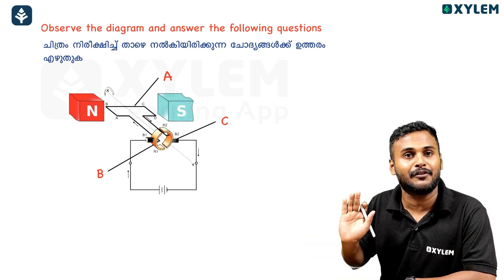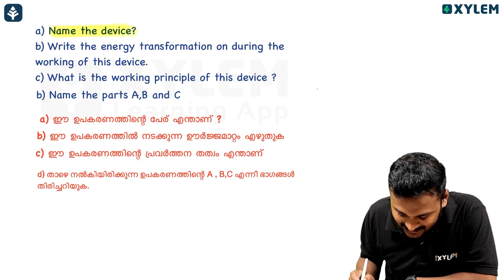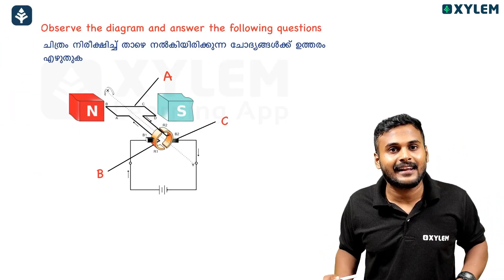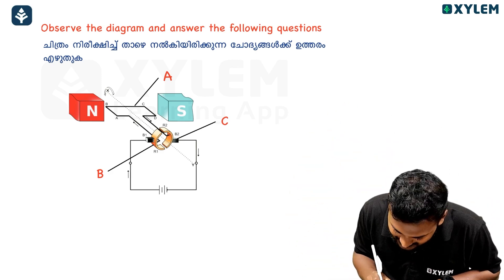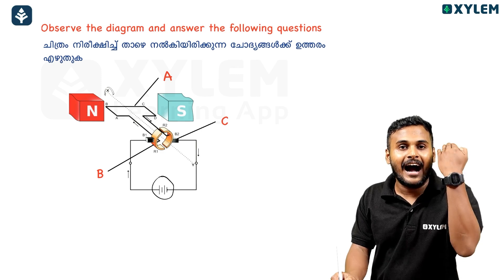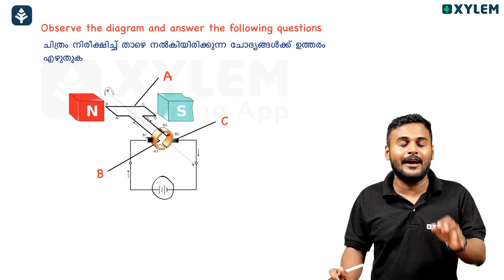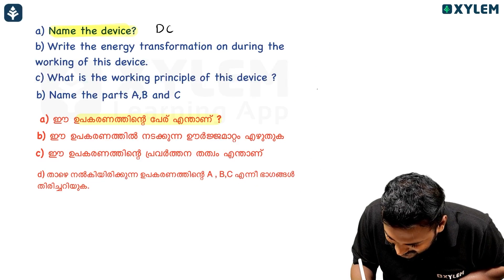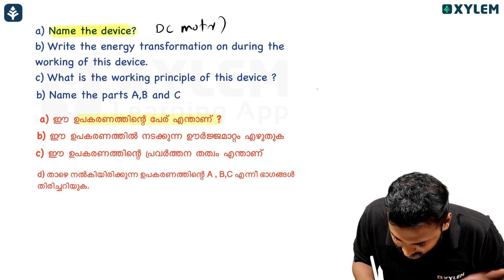Observe the diagram and answer the following questions. Name the device. What is the name of the device here? This is a DC motor — not a DC generator. The battery is getting the current from the DC motor. It is a DC motor. Crystal clear.